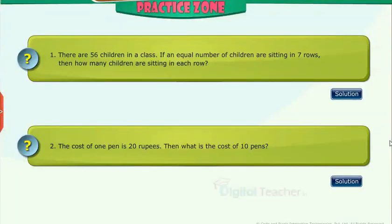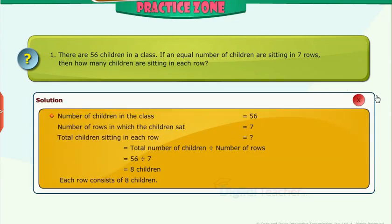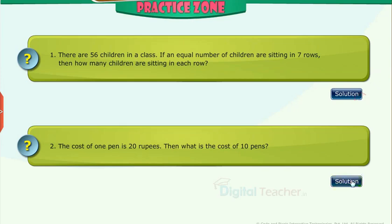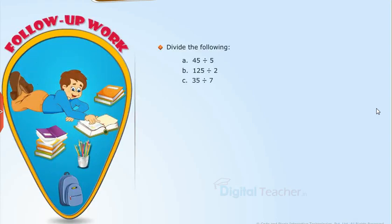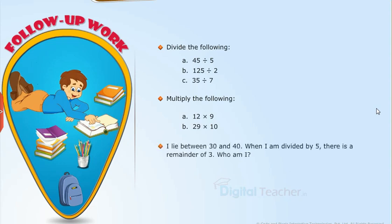Practice zone: Try to solve the questions on your own. Click solution to verify your answers. Follow-up work: Divide the following, multiply the following. I lie between 30 and 40. When I am divided by 5, there is a remainder of 3. Who am I?